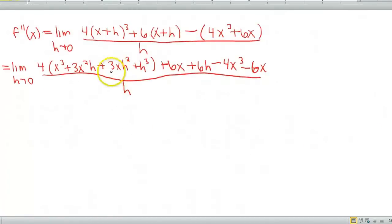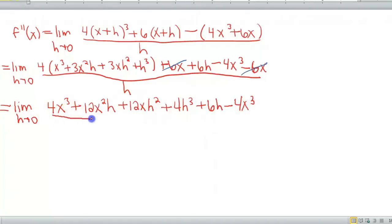Okay. Almost there. Let's see. I think I will go ahead and cancel my 6x's just so I don't have to write those twice. Let's go ahead and distribute my 4 through. So limit h approaches 0. 4x cubed plus, that gives us 12x squared h plus 12xh squared plus 4h cubed. Okay, then I've got my plus 6h minus my 4x cubed. And all of this is over h.